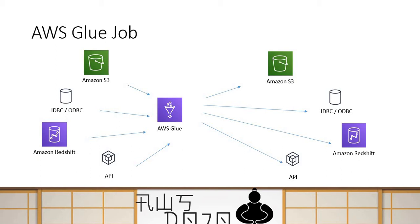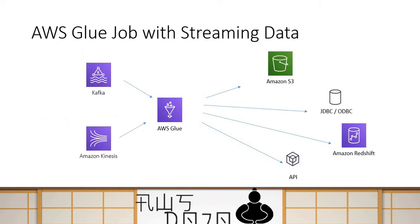That changes the nature of the Glue job a bit. Now with the new feature, Glue can start reading data from streaming data sources like Kafka or Kinesis, and it can still write to destinations like S3 buckets, APIs, or databases.